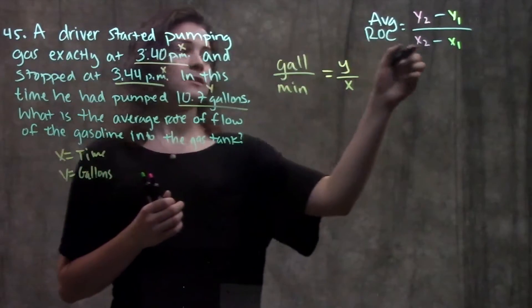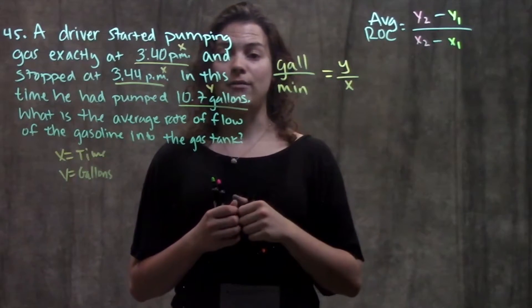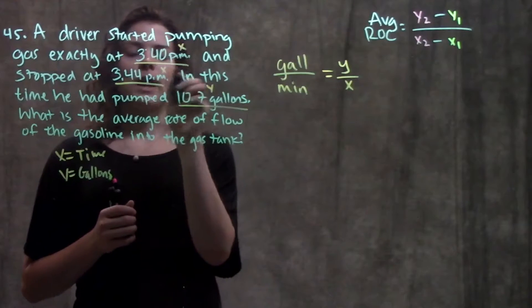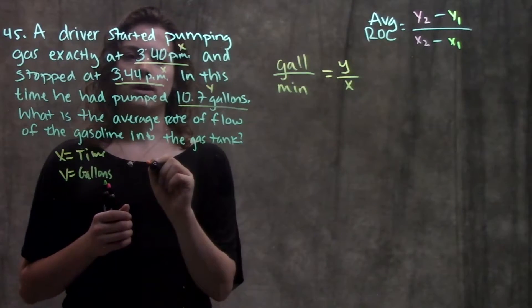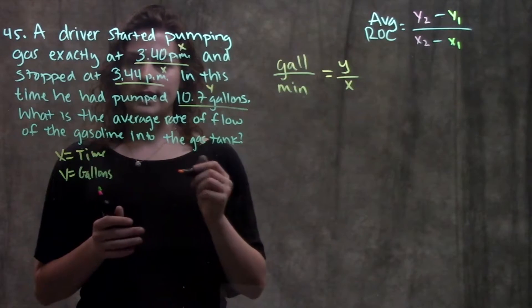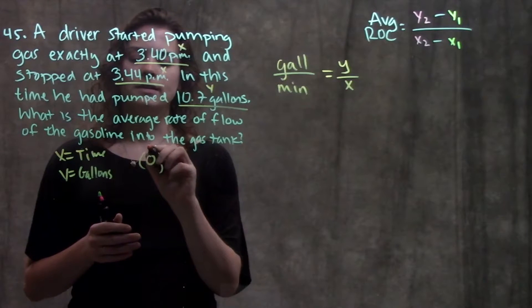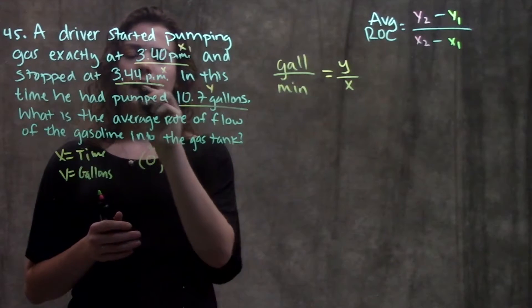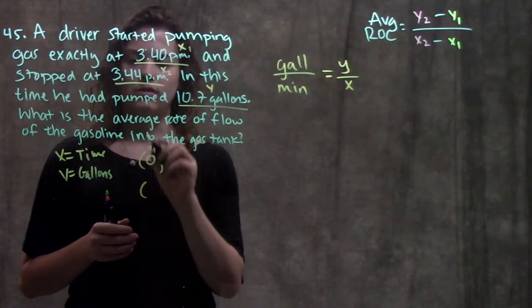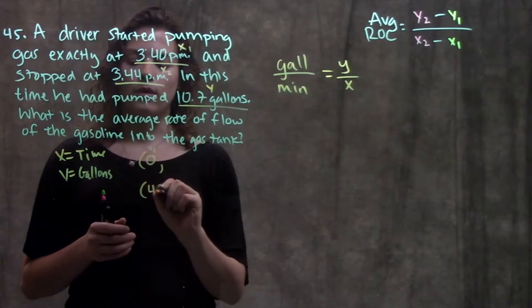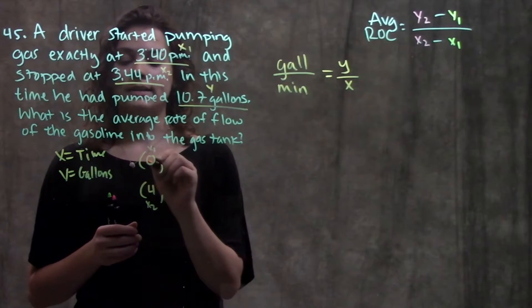Now we just need to have two sets of points that we can plug into our rate of change formula in order to find the average rate of change. So we have two points, or two times here. We have 3:40, 3:44. I can't write 3:40 as an x value. So I'm going to say 3:40 is at time zero. This is my x1. And 3:44 is my x2. But I'm going to write that as four, because that is four minutes past my starting time, or at time zero.